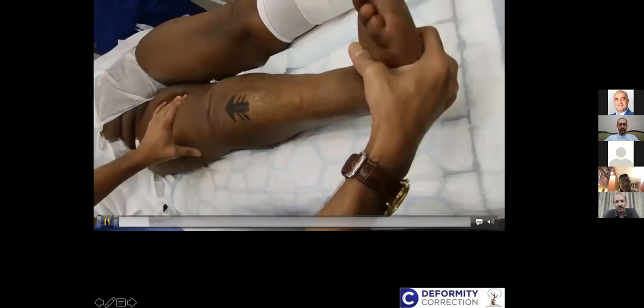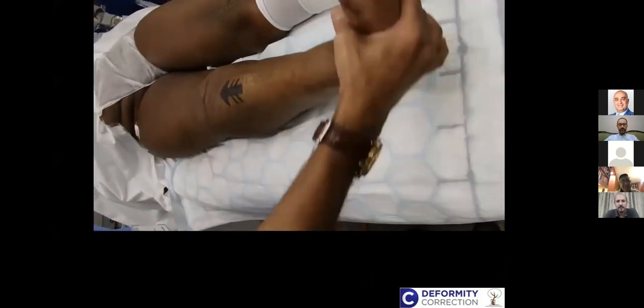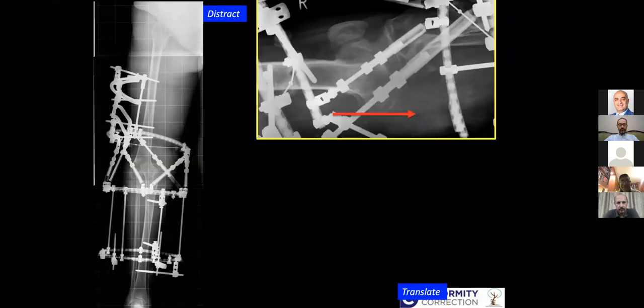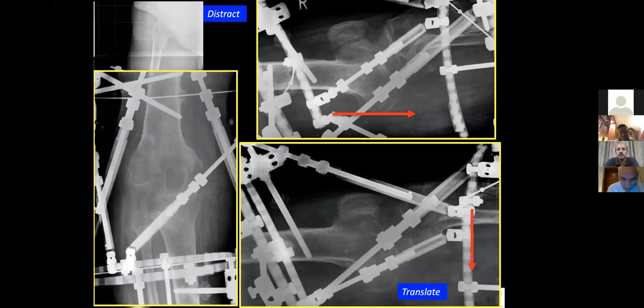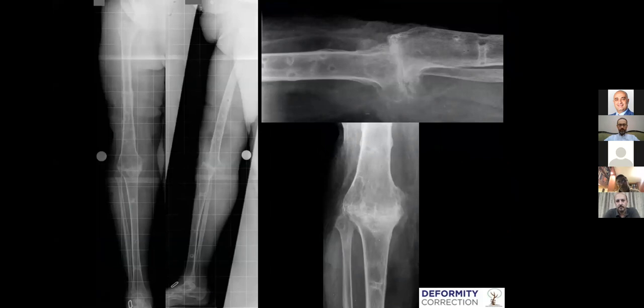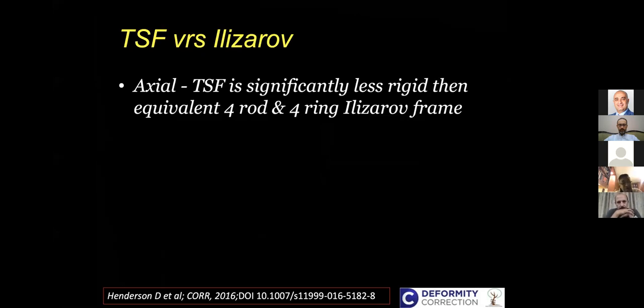This is how she was walking for 19 years. Pre-operatively on the table you can see how unstable the knee is. With a single frame you can do everything: first distract to pull it out gently until there is enough space between the tibia and femur, then translate it posteriorly, then shorten it — prepare the knee joint, shorten and fuse it, put in compression — all without changing the frame. This is the advantage: multiple corrections in all three axes with a single frame.